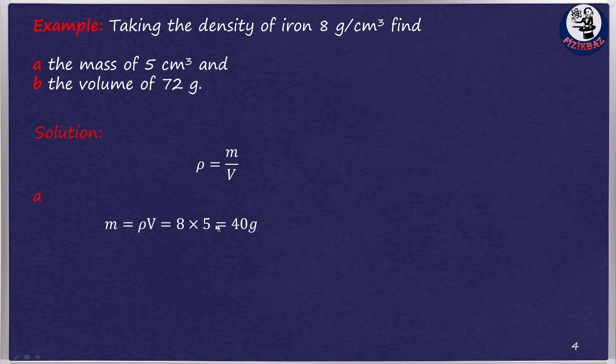For B, we can also convert the formula that gives the density to give the volume as follows. If we replace the values of the density and mass in the formula, we can find the volume as V = m/ρ = 72/8 = 9 cubic centimeter.